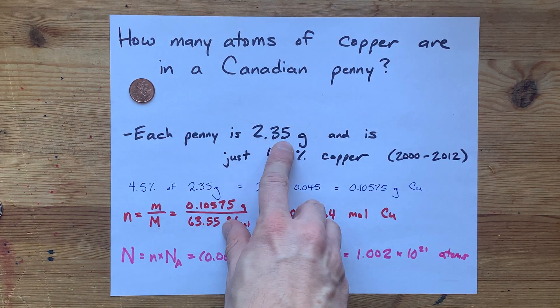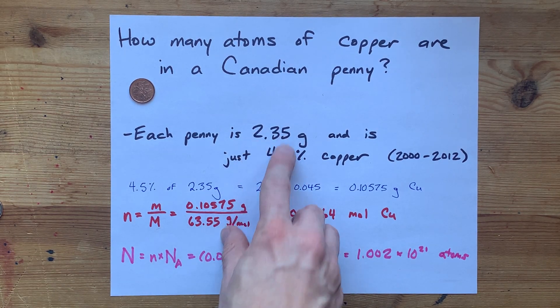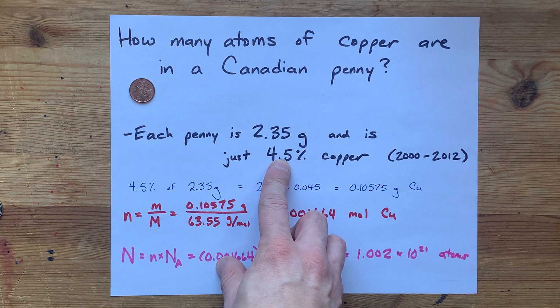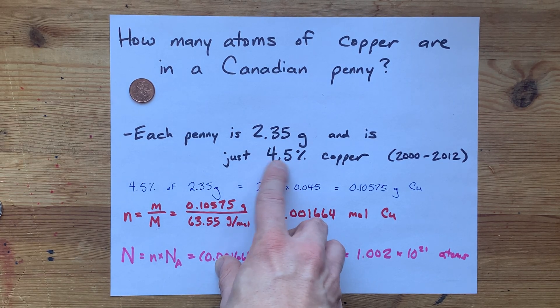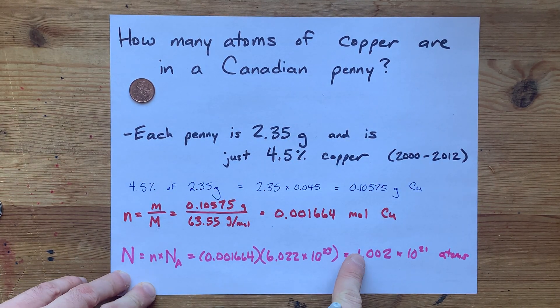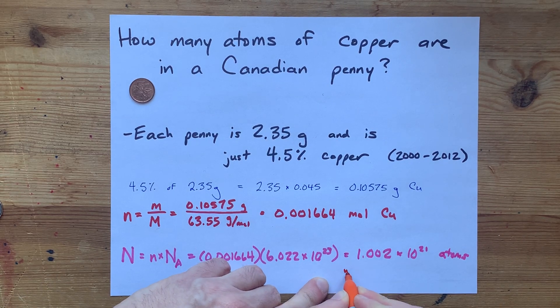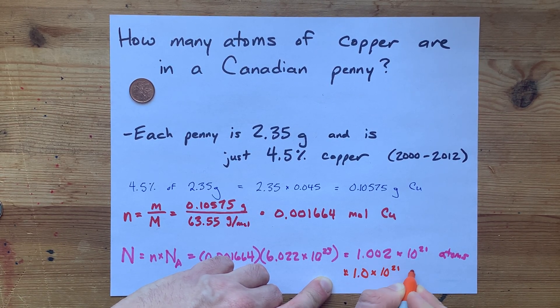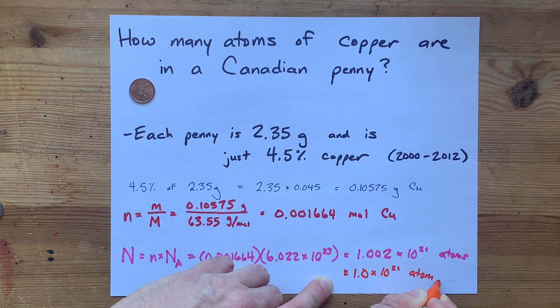This had three significant figures. This one only had two, and I stole this number from Wikipedia. So if you have a more accurate percentage, your sig figs might be different. But I only have two sig figs here. So my answer is actually 1.0 times 10 to the 21 atoms. And your answer should be about the same.